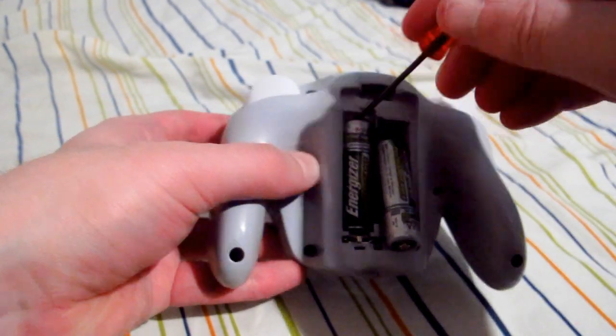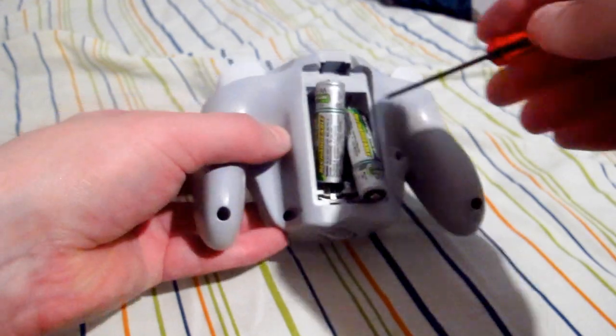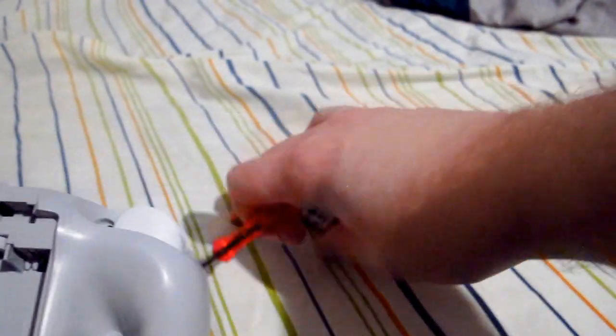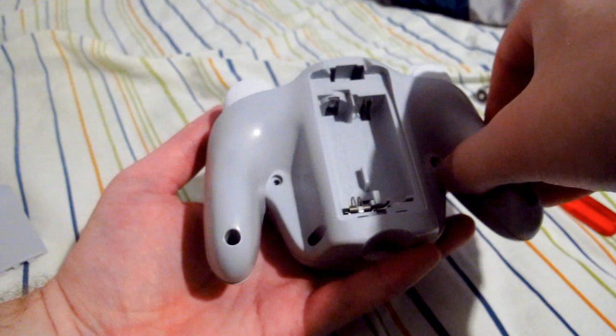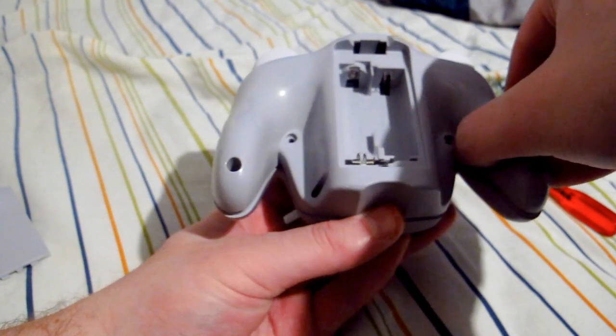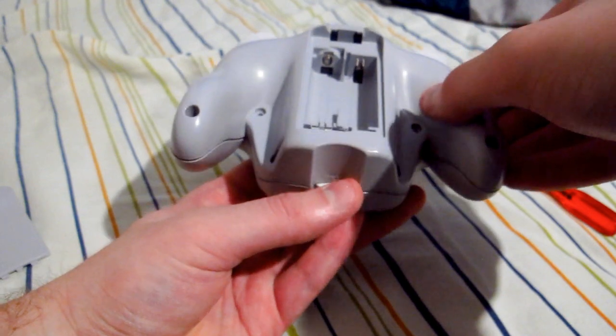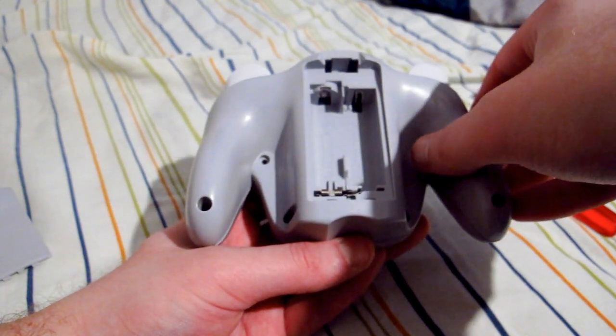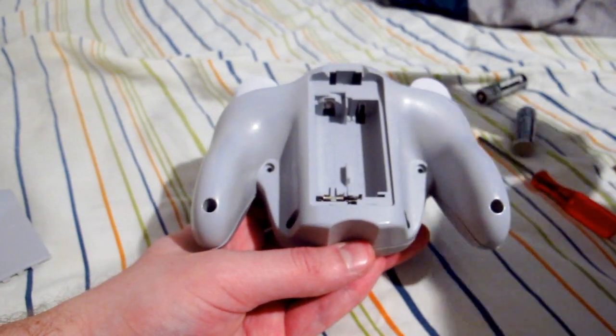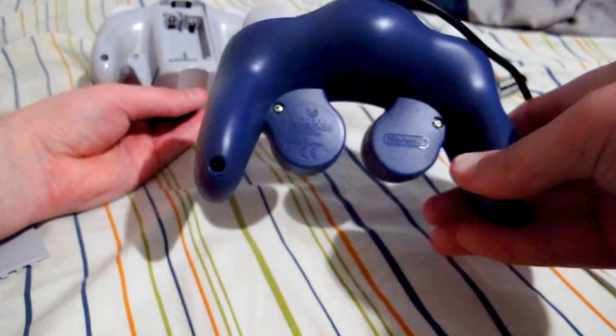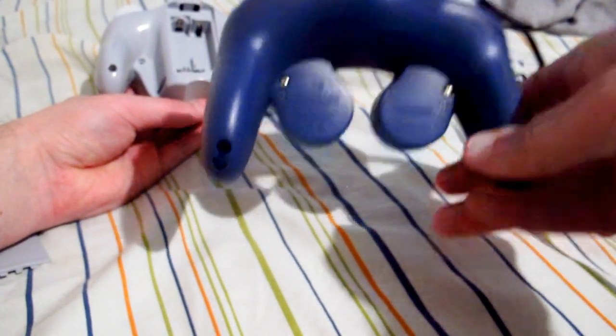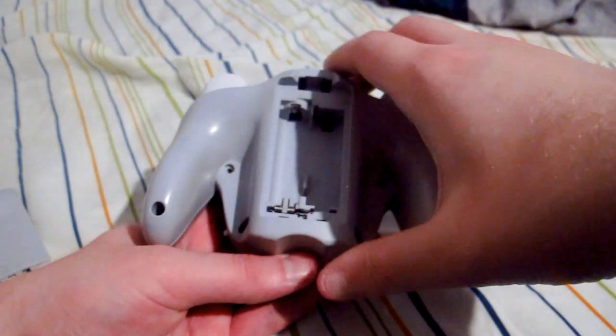Now it should come apart pretty easily. You want to have all the circuitry and stuff on the bottom half if you can help it. So hold on to the wheel on the bottom if you're on a wavebird controller. By the way, if you're modifying a regular GameCube controller, it's only got six screws and you don't have to worry about the wheel.